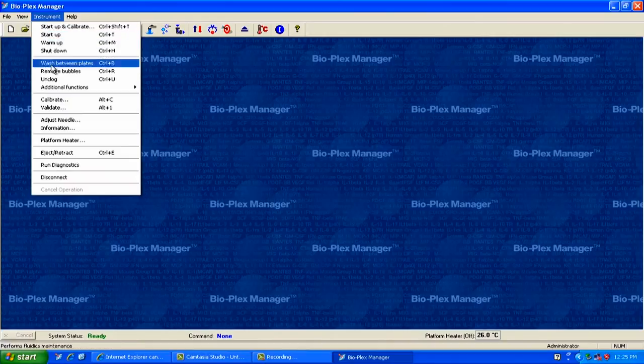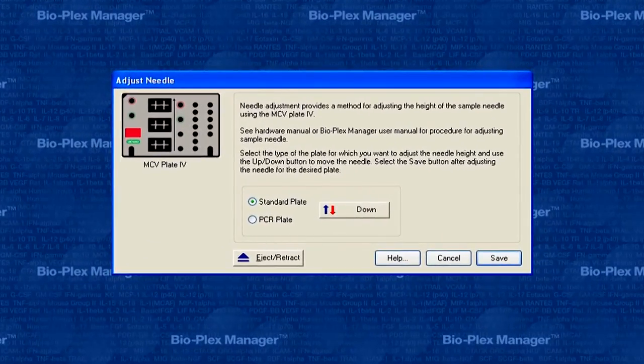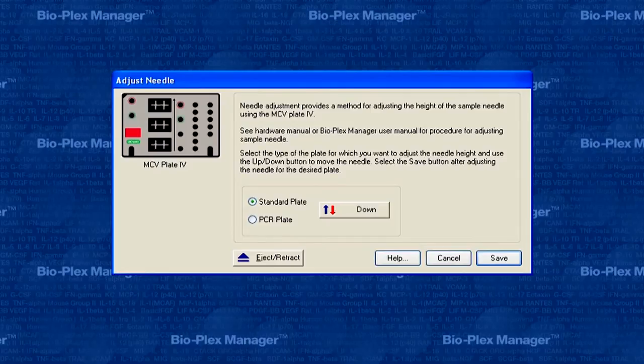Now, click Instrument in the menu bar of the software and choose Adjust Needle from the drop-down menu. The Adjust Needle dialog box will appear.